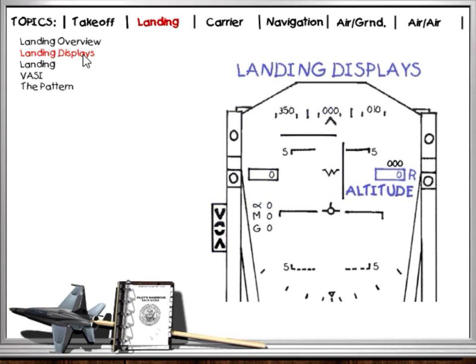Altitude readout is critical as you set up the approach. Select the radar altimeter for display on the HUD by pressing Control-A. This gives you a readout of height above ground instead of height above sea level.